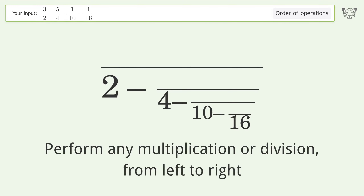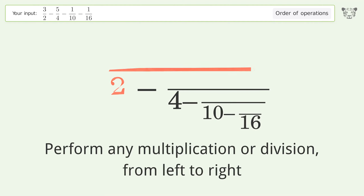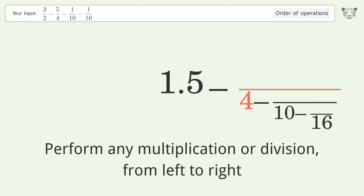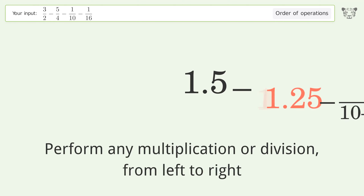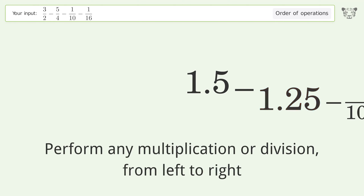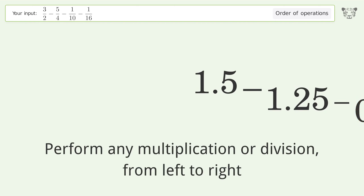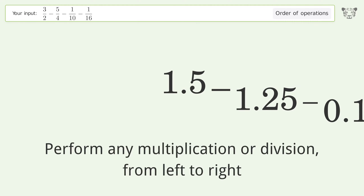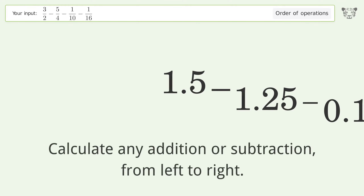Perform any multiplication or division from left to right: 3 over 2 equals 1.5, 5 over 4 equals 1.25, 1 over 10 equals 0.1, 1 over 16 equals 0.0625. Then calculate any addition or subtraction from left to right: 1.5 minus...